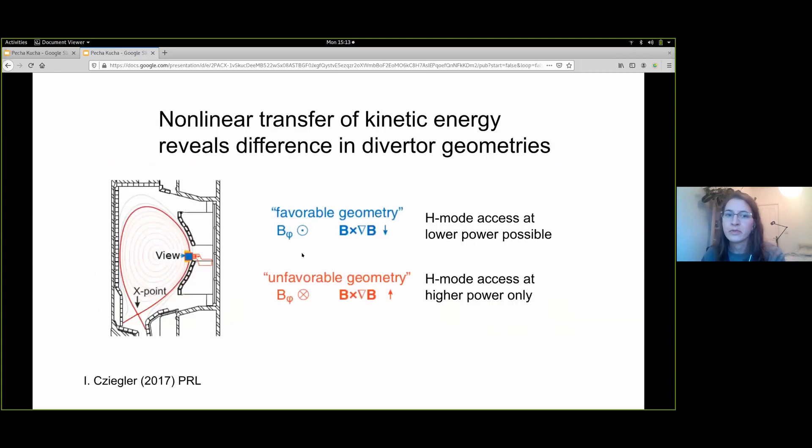Microscopic changes can be seen in this interaction, for example in experiments on CMOD where favorable geometries with the ion grad B drift pointing away towards the X-point and unfavorable where it points away from the X-point were compared in their transition power thresholds.